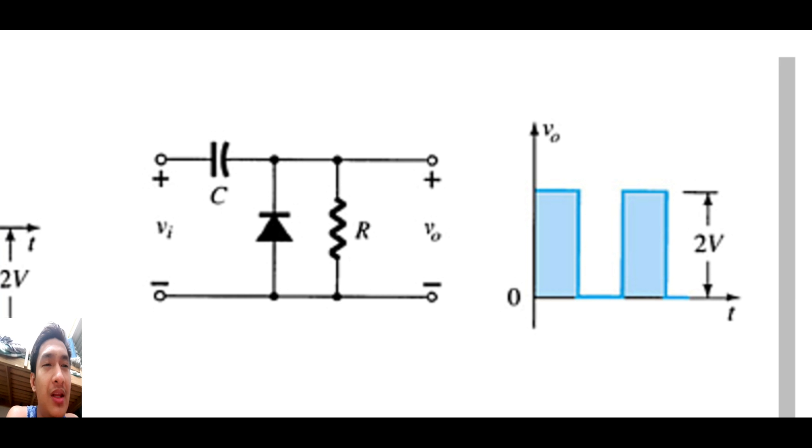So the first thing that you're going to do is analyze the circuit wherever the diode gets forward biased. In this case, the diode gets forward biased during the negative half cycle. So during the negative half cycle is where you're going to analyze it first. The polarity of the source is here, the plus is here, the minus is here, and the diode is forward biased.